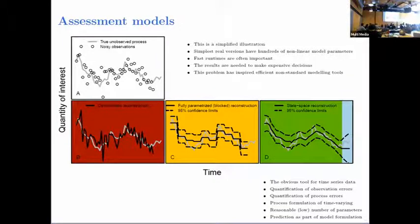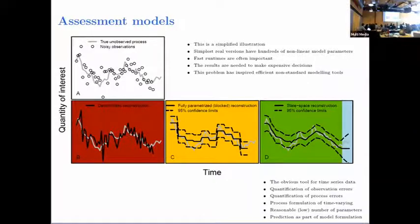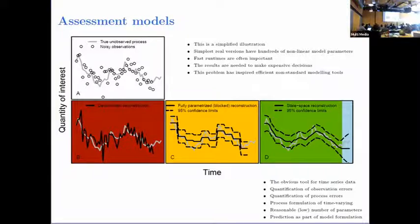I like to think about it in three categories. The first is deterministic models, where we assume the catches or whatever it is have no noise. With this simplified example, there's only one possible way to reconstruct the path — by connecting the dots — and you get a reconstruction like the black line. It's too fluctuating because we don't filter out the observation noise, and we have no way of quantifying uncertainty.